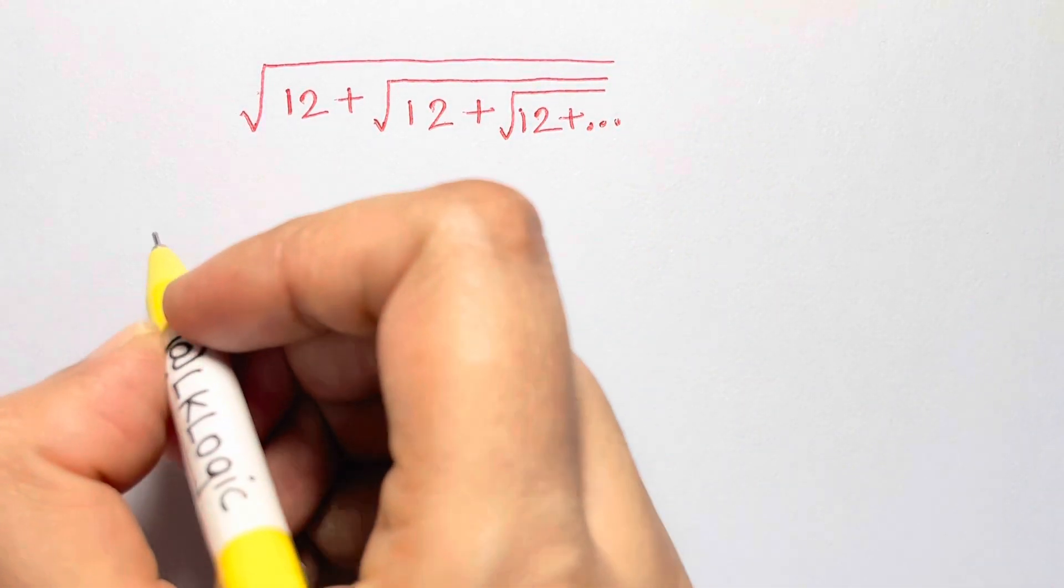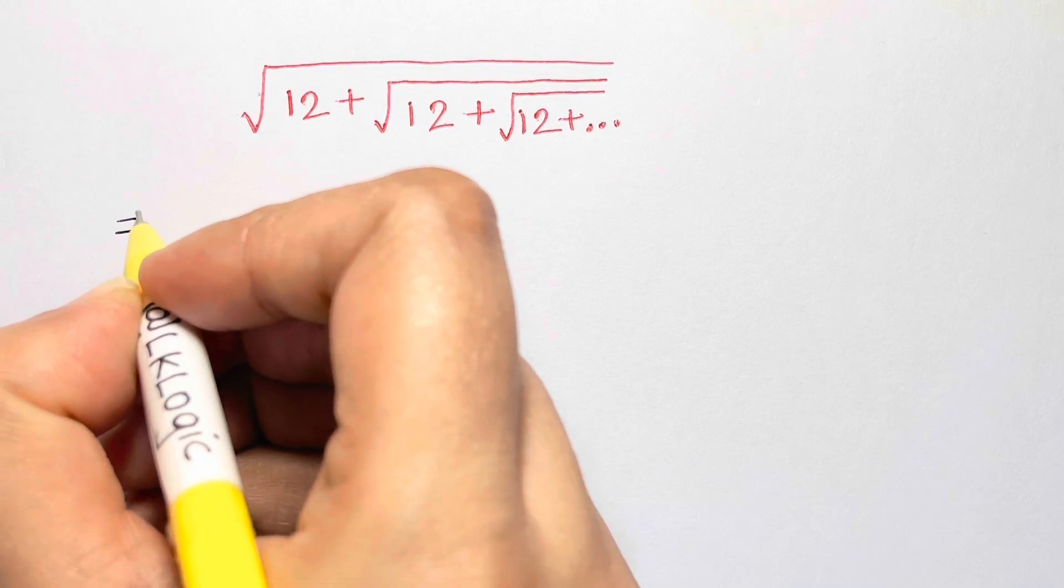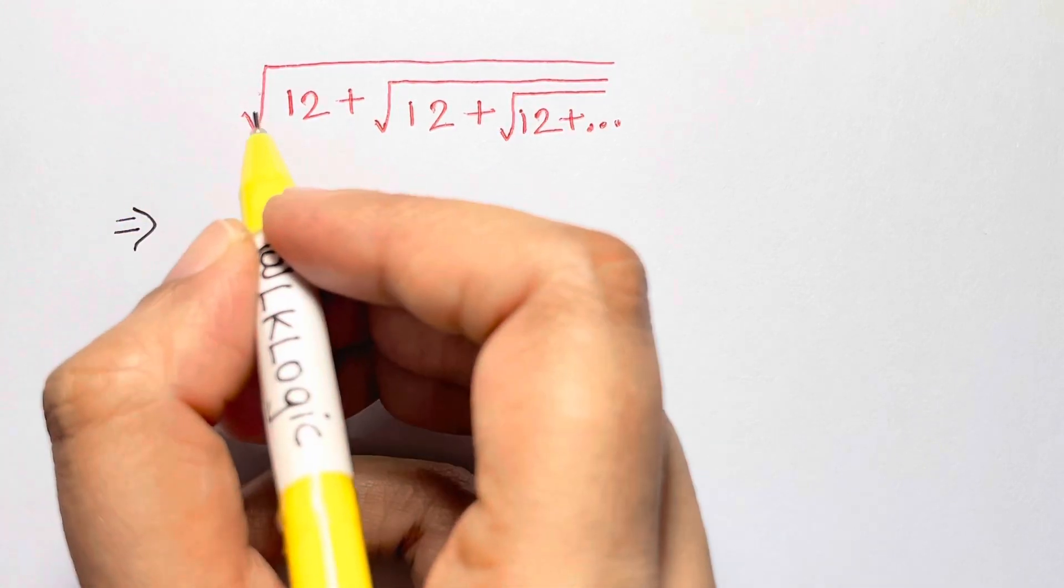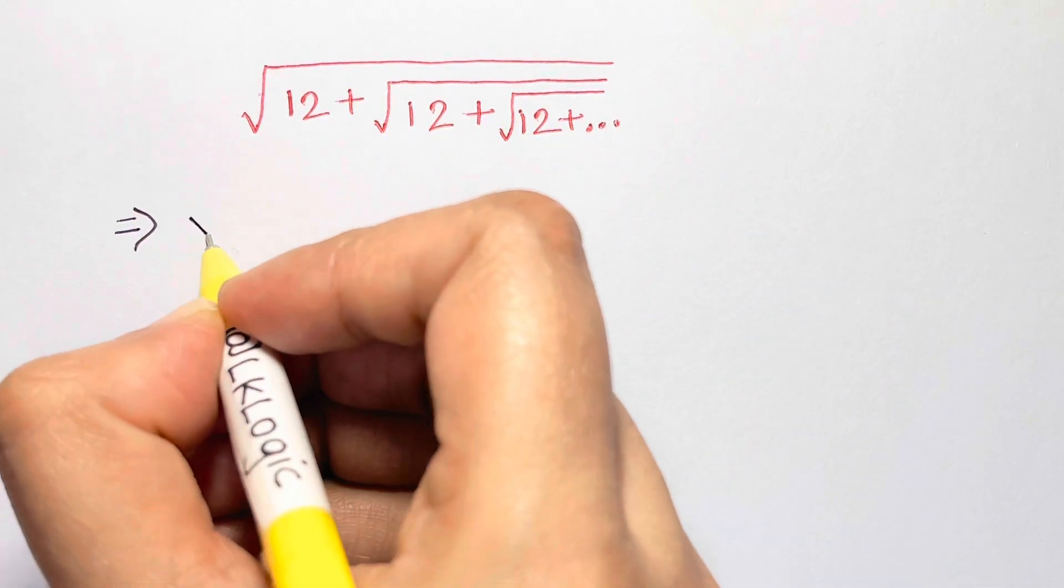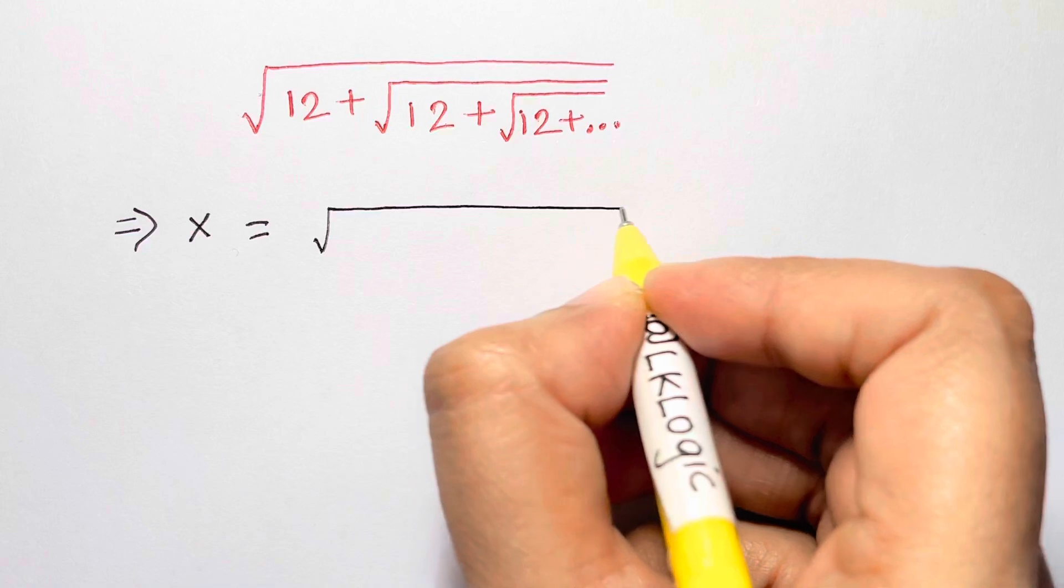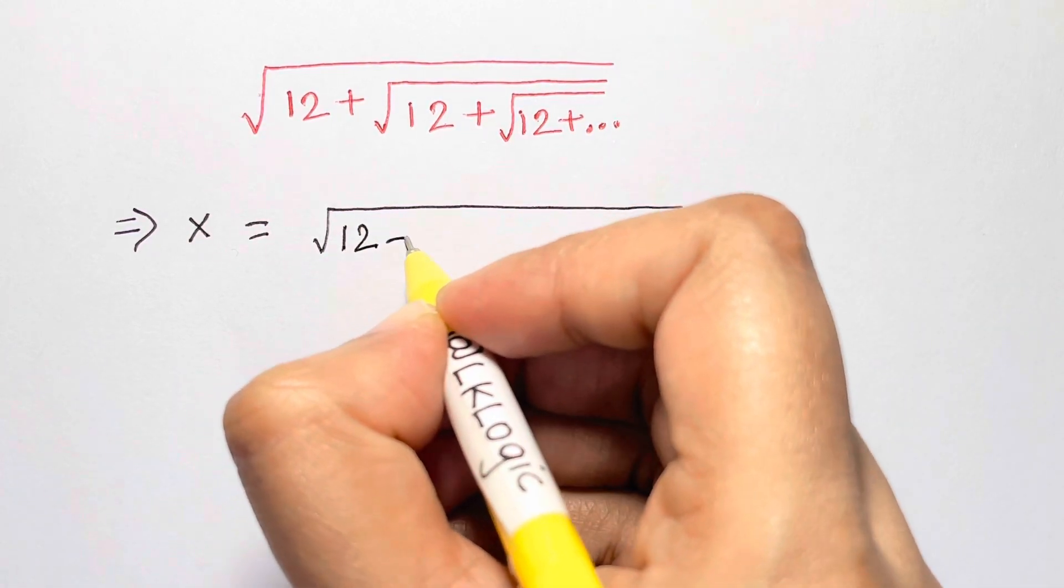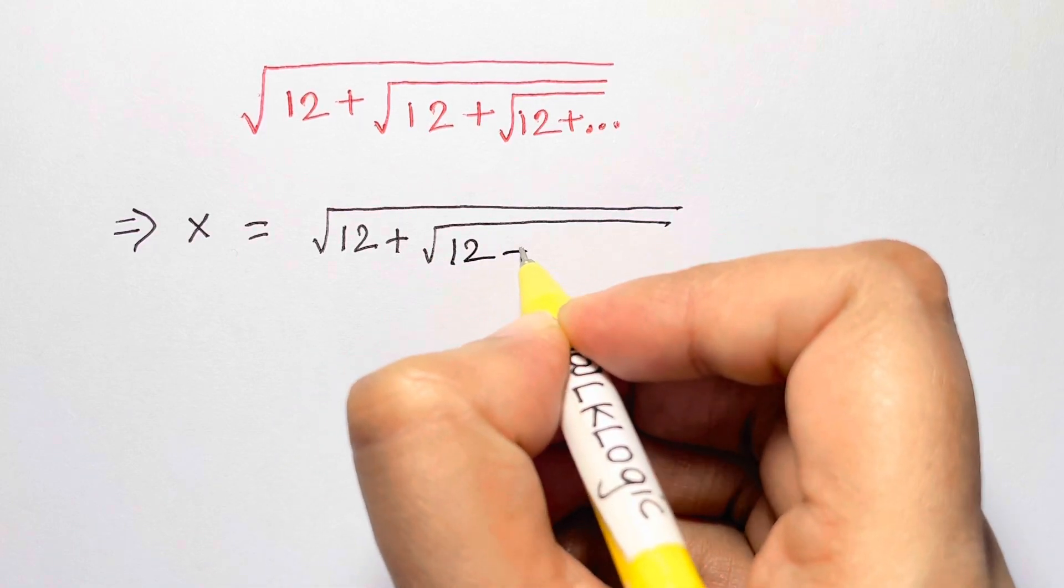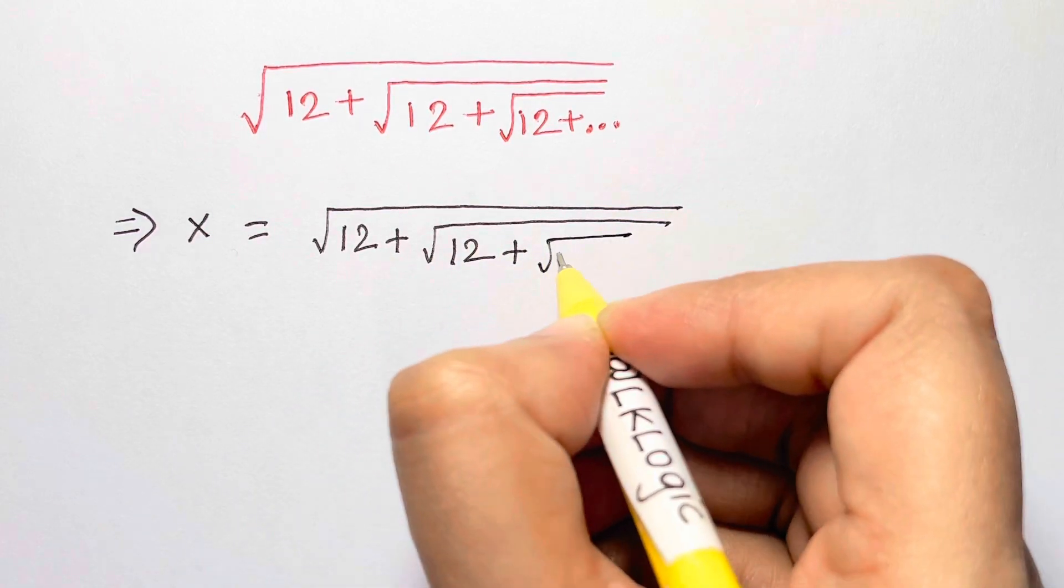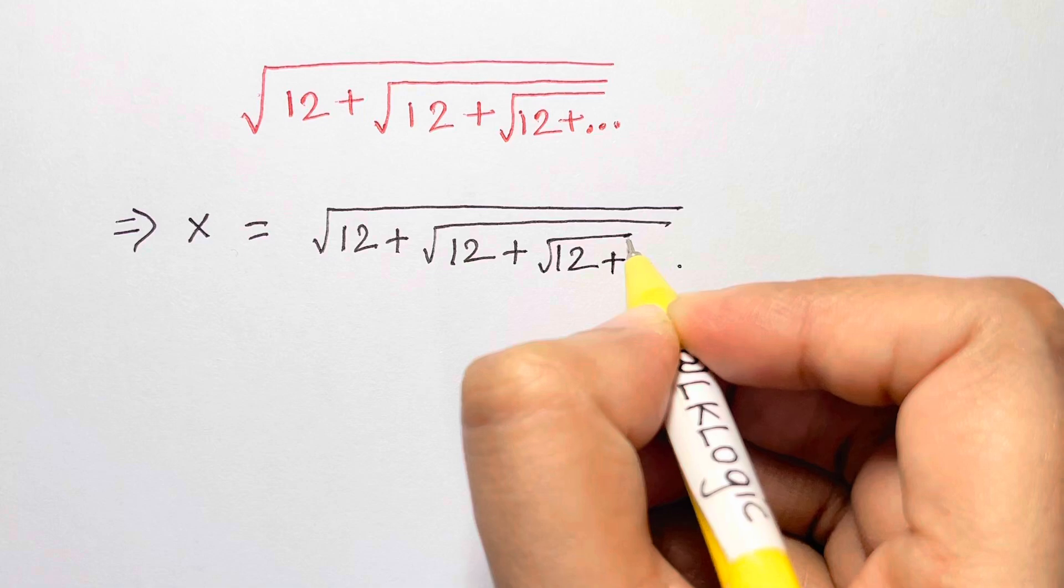Now what we are going to do, the first step is to assume or suppose that this whole term is equal to x. Let x equal square root of 12 plus square root of 12 plus square root of 12 and so on, it continues.